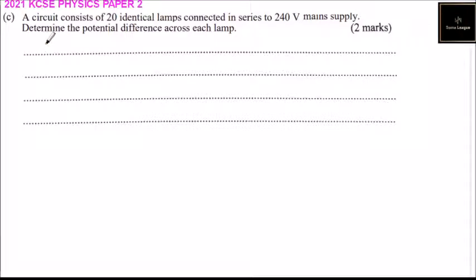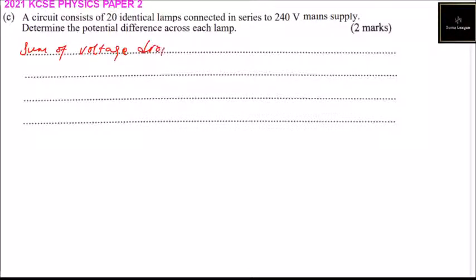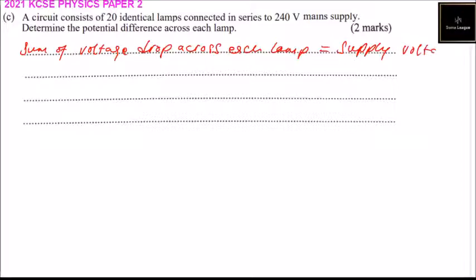Question 14C: A circuit consists of 20 identical lamps connected in series to a 240-volt main supply. Determine the potential difference across each lamp — two marks. The sum of the voltage drops across each lamp equals the supply voltage.